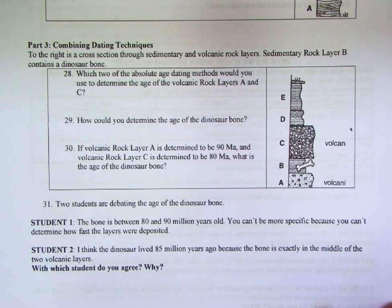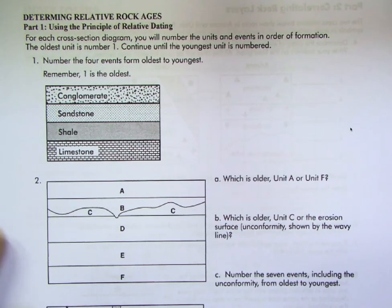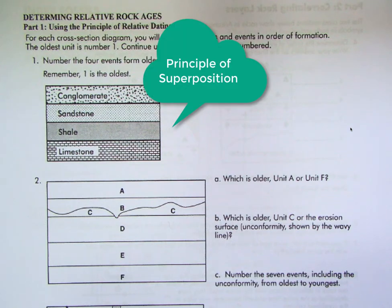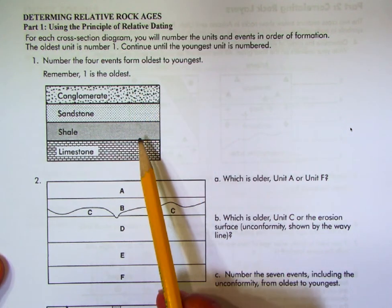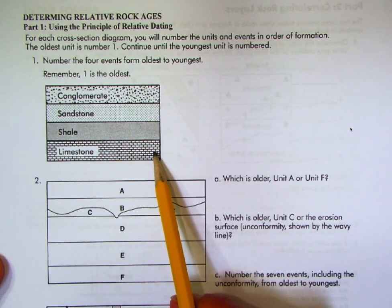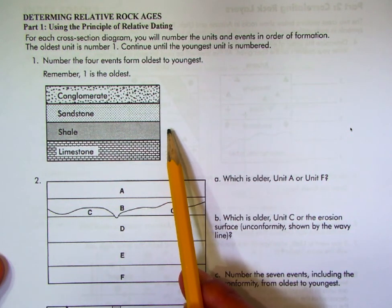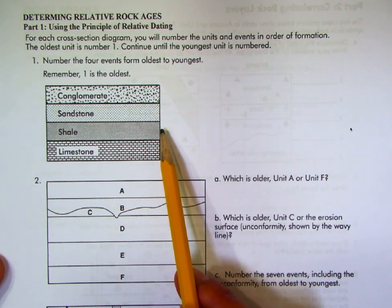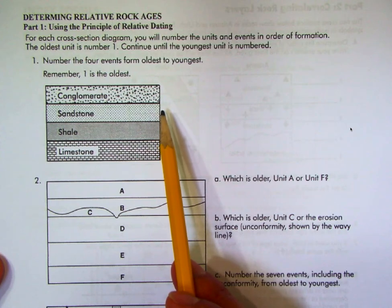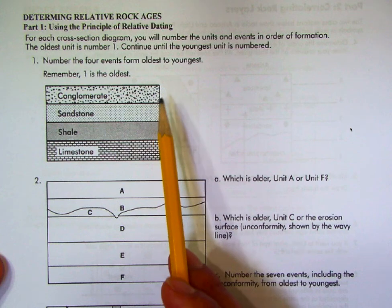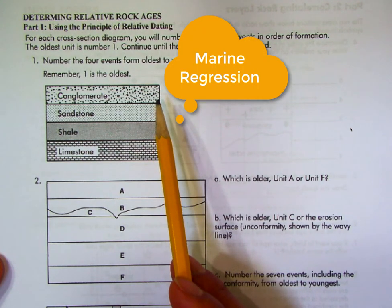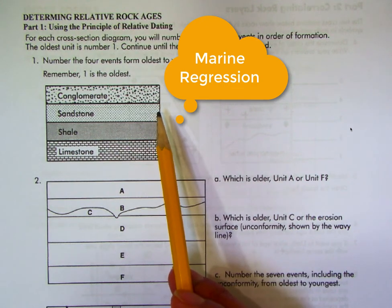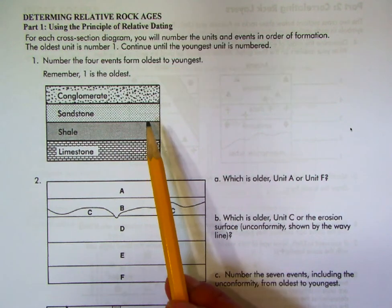Now we start working on relative geologic time puzzles. Using the principle of superposition, limestone would be the oldest unit and conglomerate the youngest. This sequence also tells an environmental story: limestone forms in deeper marine waters, shale in outer continental shelf to shelf environments, sandstone at a continental shelf or shoreline, and conglomerate in rivers. This shows sea level going from deeper to shallower over time — we call this a marine regression.